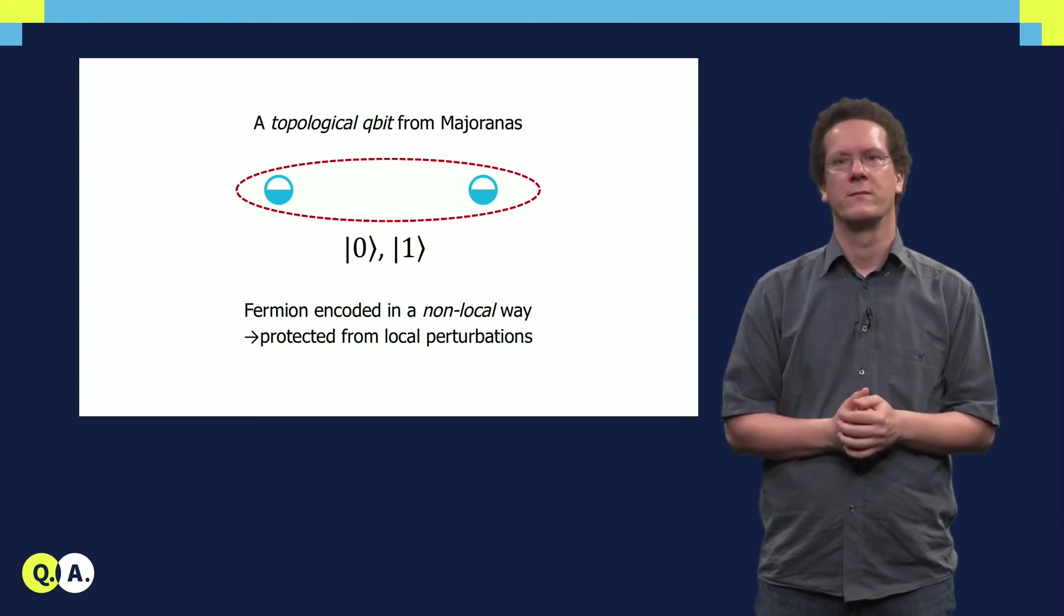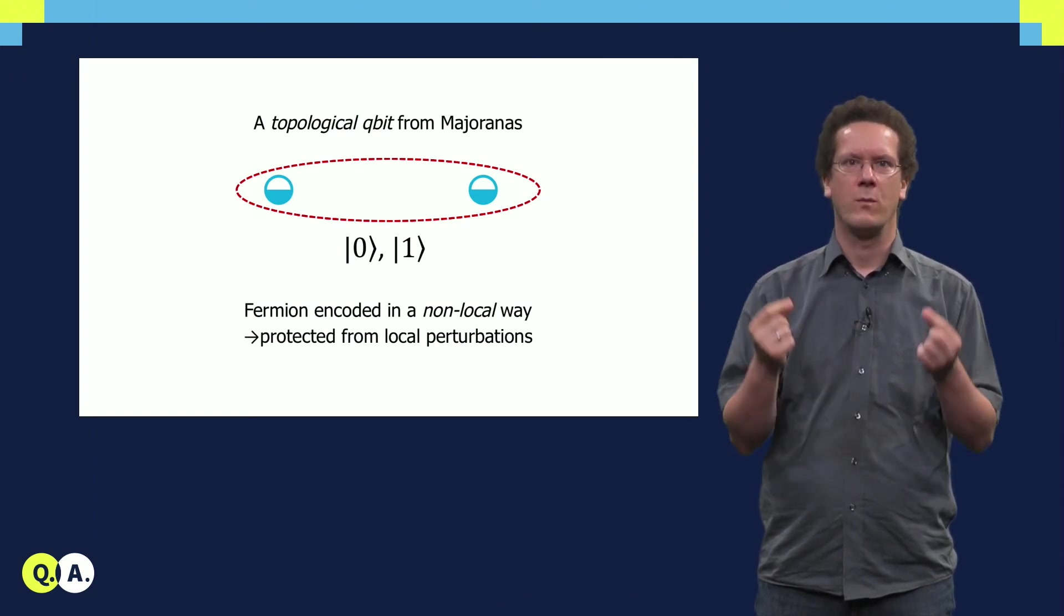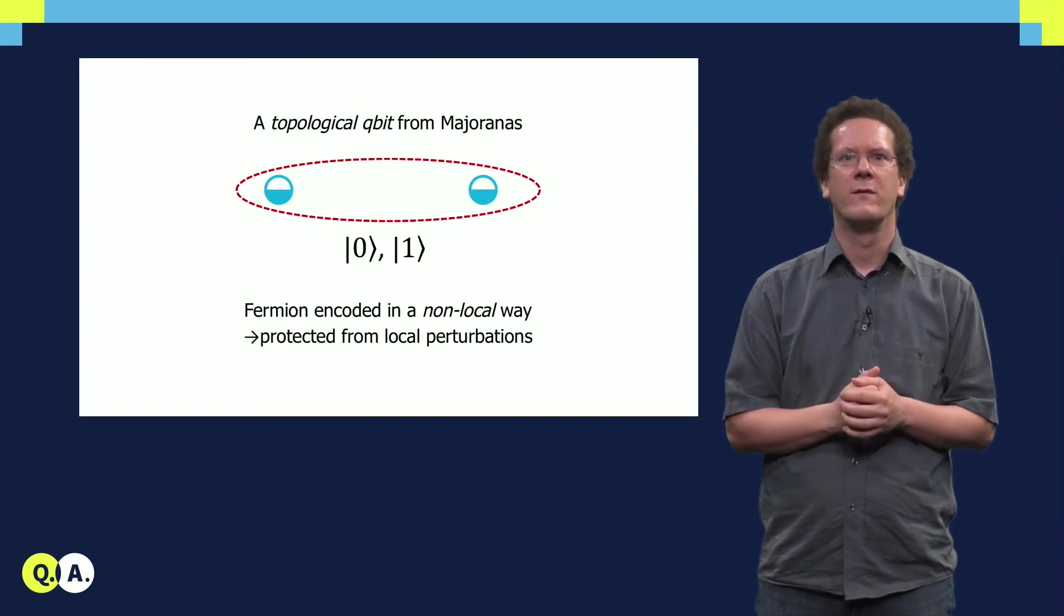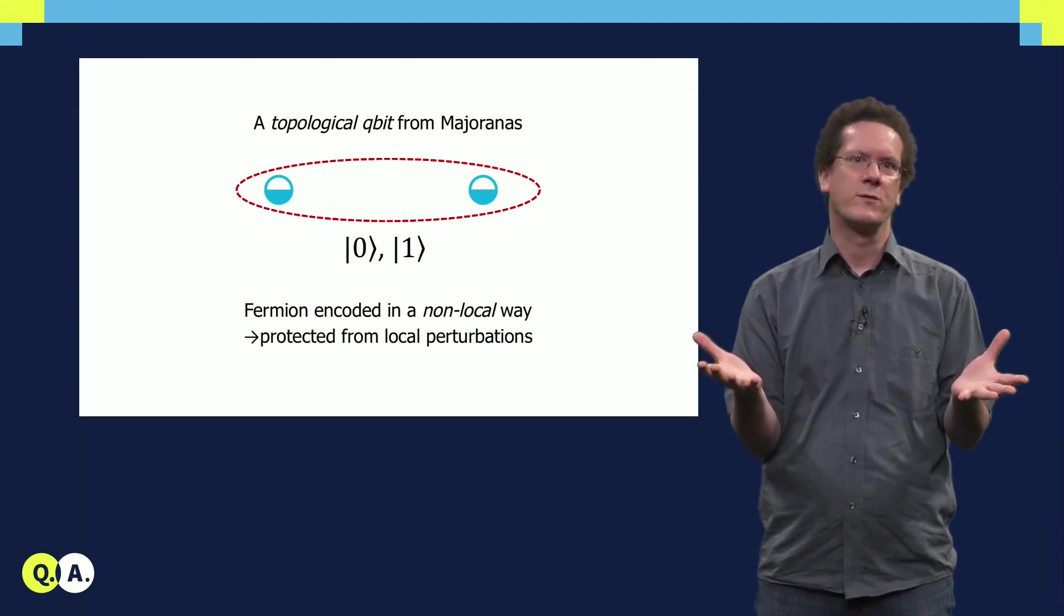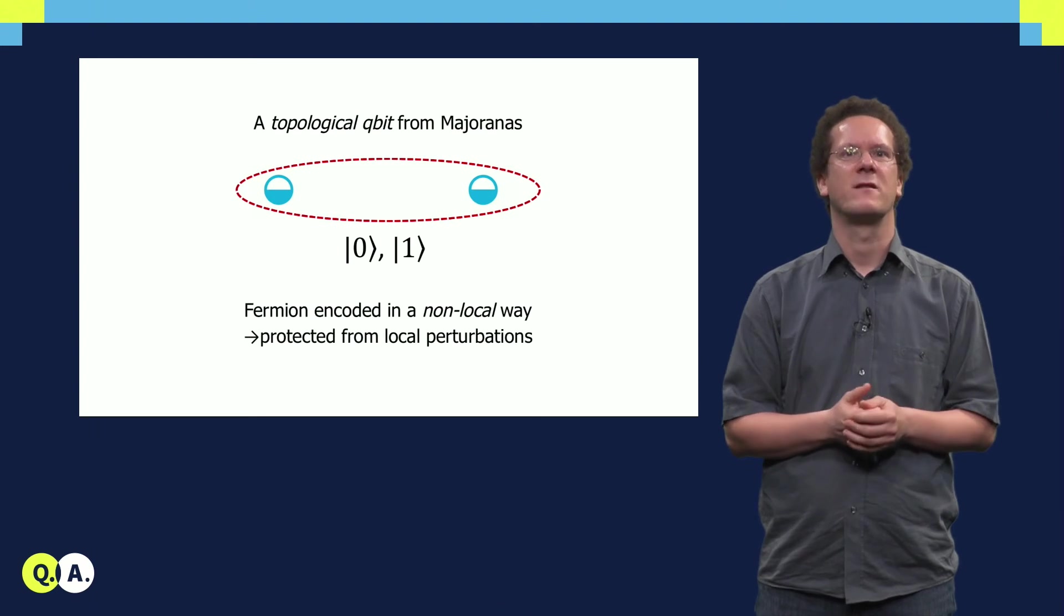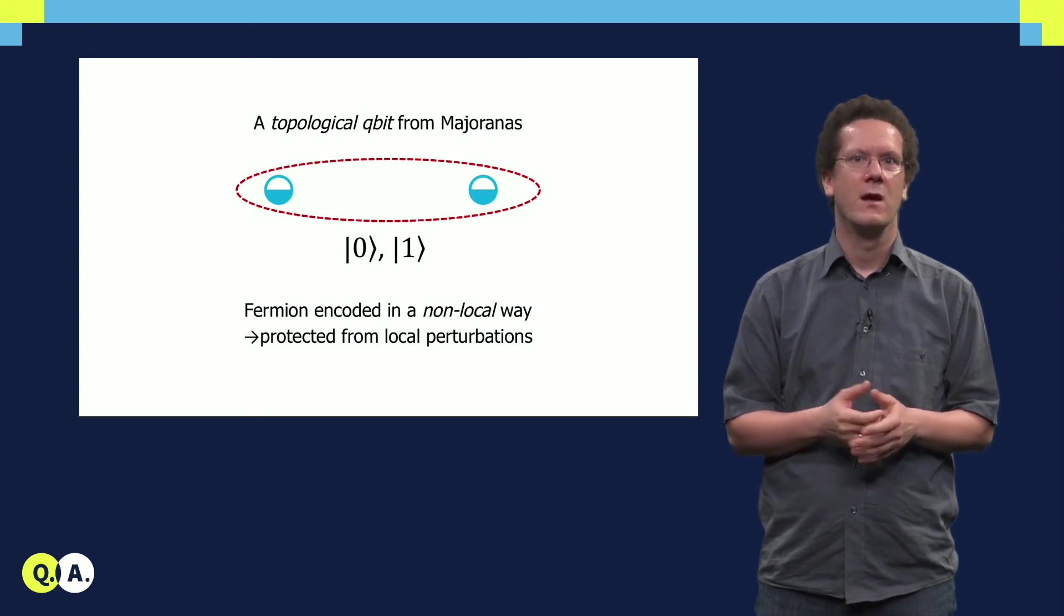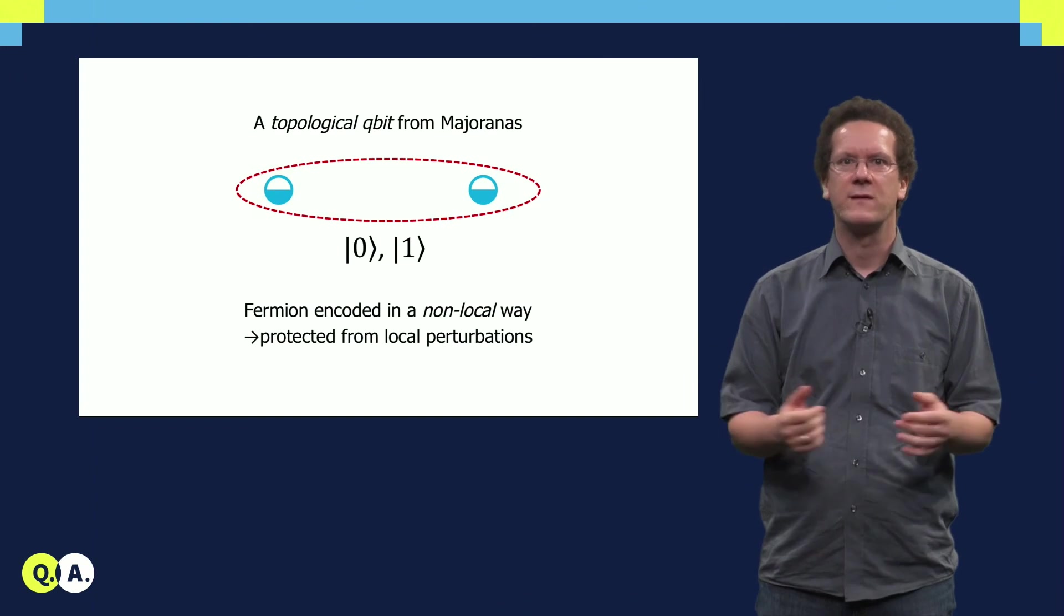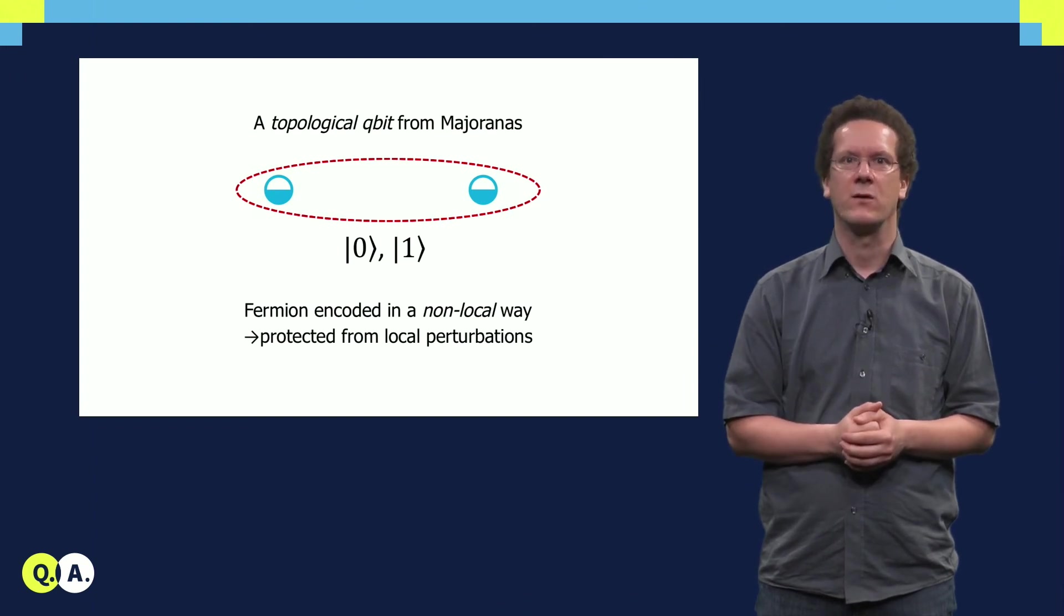This is our topological qubit. Two Majorana-bound states form one topological qubit, which is protected against almost all sorts of perturbations and is expected to have a very long coherence time. For that reason, it is very interesting to look for Majorana-bound states in condensed matter.